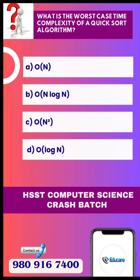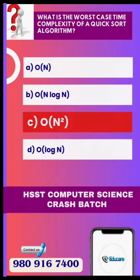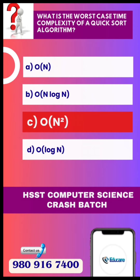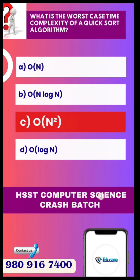Option A: O(N). Option B: O(N log N). Option C: O(N²). And Option D: O(log N). The correct answer is Option C, O(N²).